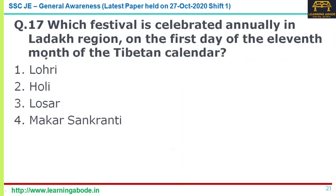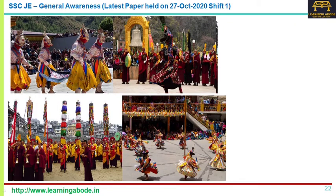Question number seventeen: which festival is celebrated annually in the Ladakh region on the first day of the eleventh month of the Tibetan calendar? The answer is option three — Losar. Losar is a festival in Tibetan Buddhism celebrating the new year on the first day of the lunisolar Tibetan calendar, corresponding to approximately February or March.